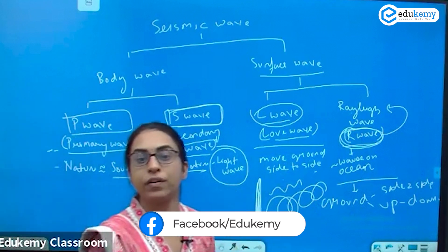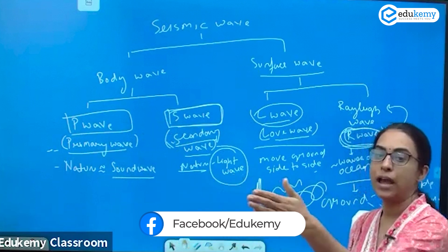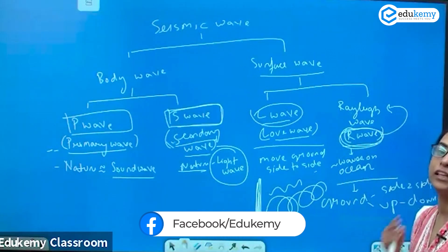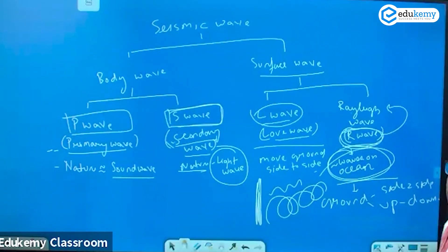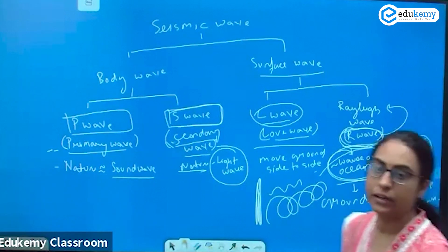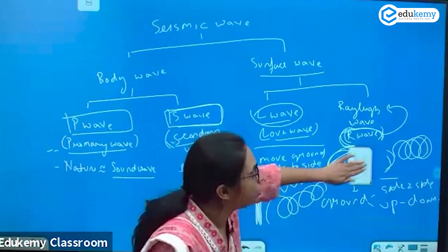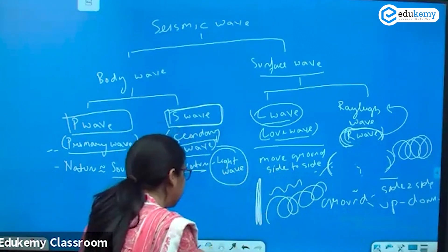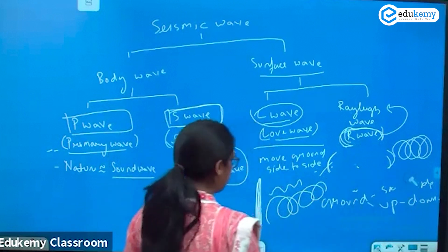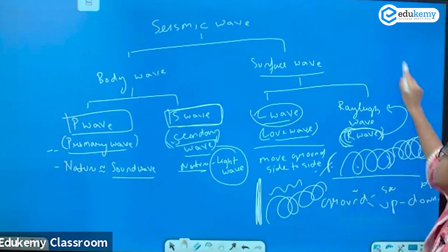The L wave, known as the Love wave, moves the ground side to side. The R wave is like the waves on the ocean — they move not only side to side but also up and down. They are not actually on the ocean; they travel on the ground, but their motion is just like ocean waves.